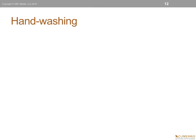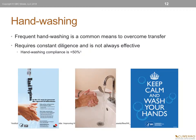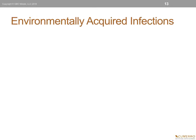Another tool we can use to fight off bacteria is proper hand washing. Frequent hand washing is a common means to overcome transfer of bacteria. It requires constant diligence, but unfortunately it is not always effective. Hand washing compliance is less than 50% according to some research. Environmentally acquired infections are a part of our daily lives, and the real concern revolves around antibiotic-resistant superbugs that could kill millions of people annually.